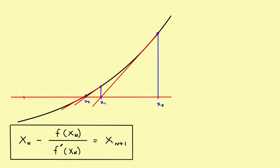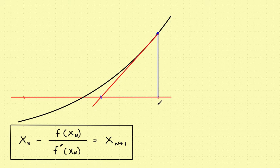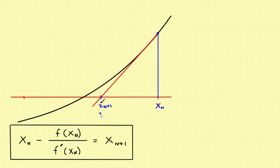Let's clean things up and work in general terms. You have a starting point which we'll call x sub n. The question is: if this is x sub n, where is x sub n plus 1? That's the point over here where the tangent line crosses the x-axis, but we need to know exactly where it is. Given the first point, Newton's method allows you to figure out where the second point is by using the slope of the tangent line.